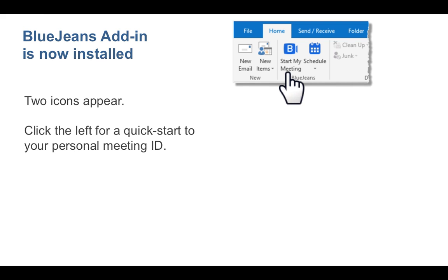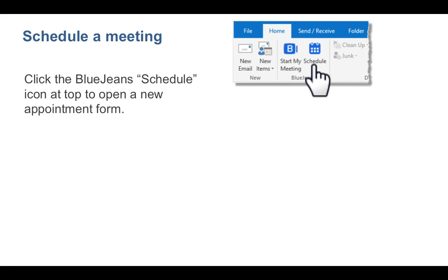Click the left icon to quick start your personal meeting ID. To reserve the BlueJeans meeting credentials for an event, click the right Schedule icon.